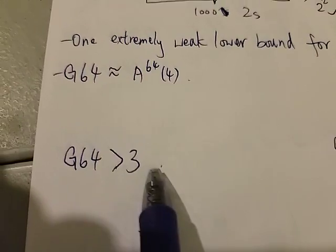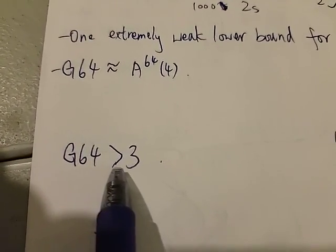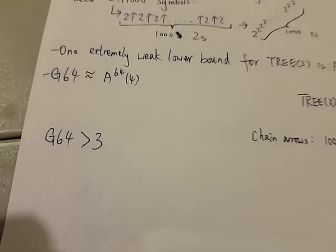In other words, it's kind of like saying 3 is a lower bound for G64. And of course, we know that G64 is way, way, way bigger than 3. So this is kind of a silly lower bound.